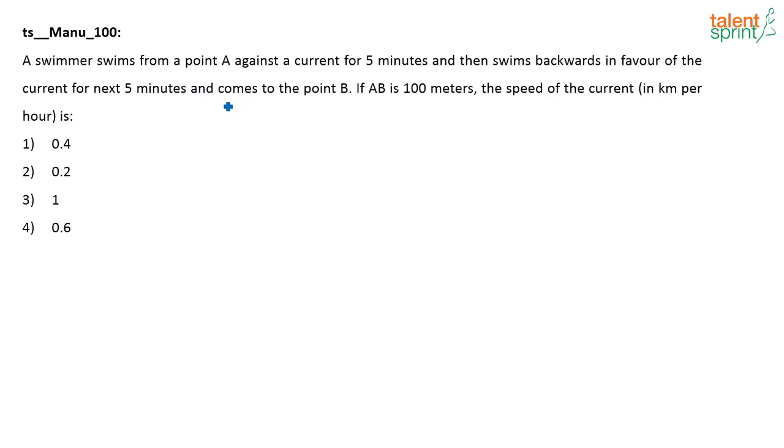What is given? A swimmer swims from point A against the current for 5 minutes, then swims backwards in favor of the current for the next 5 minutes and comes to point B. If AB is 100 meters, the speed of the current in kilometers per hour is?